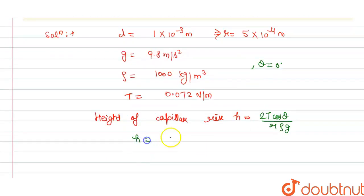So we get H equals 2 times 0.072, cos 0 is 1, divided by 5 × 10⁻⁴ meter, density is 1000, and g is 9.8. So from this we get 2.94 × 10⁻² meter, and this is the answer for the question. Thank you.